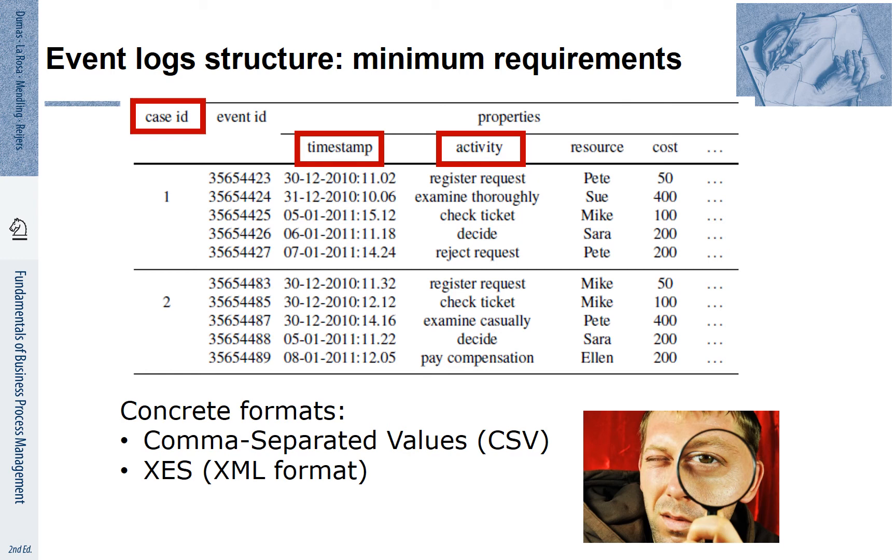We need to know which activities have happened. You see here that the activities are called register request, examine thoroughly, check ticket, decide, reject request, register request, check ticket, examine casually, decide, and pay compensation.